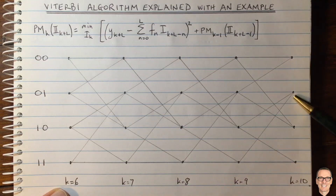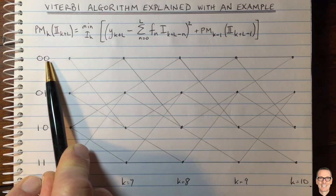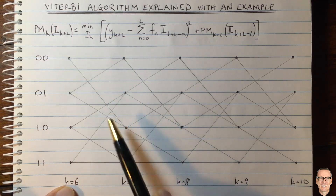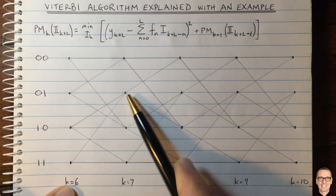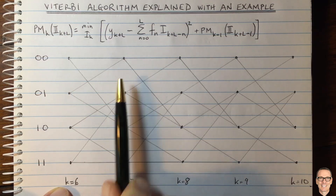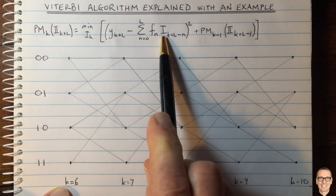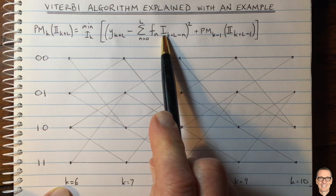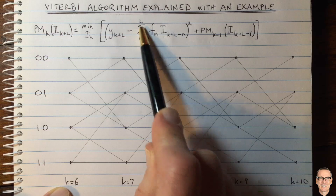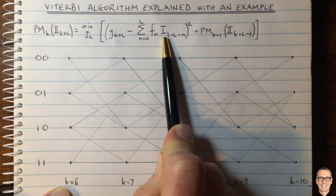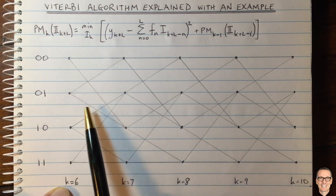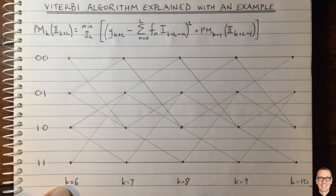Each time period here has four states. The states are given by 00, 01, 10, and 11. You can see there are eight different branches between each of the time periods. This corresponds to the eight combinations of the three data symbols — the ones and zeros — that are possible. Because we are looking at L equals 2, there's the direct path plus two inter-symbol interference paths, making 3 symbols total. 2 to the power of 3 equals 8, so there are eight branches in our trellis.